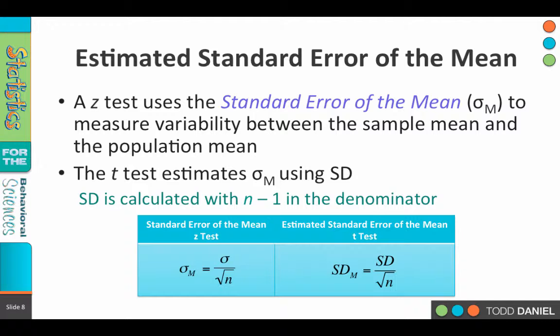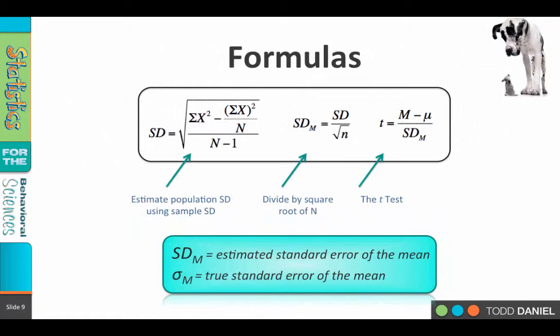In the two formulas, you can see that the standard error of the mean that we used for the z-test is sigma, the standard deviation of the population, divided by the square root of n. But when we estimate the standard error of the mean, we divide the standard deviation of the sample by the square root of n, remembering that we calculated the standard deviation of the sample using n minus 1 in the denominator.